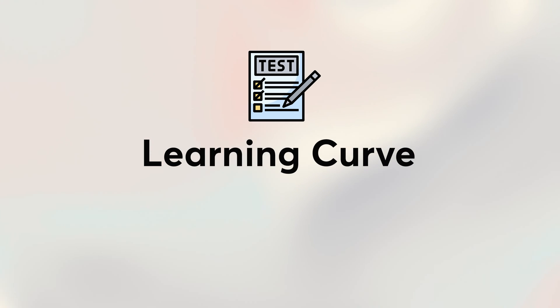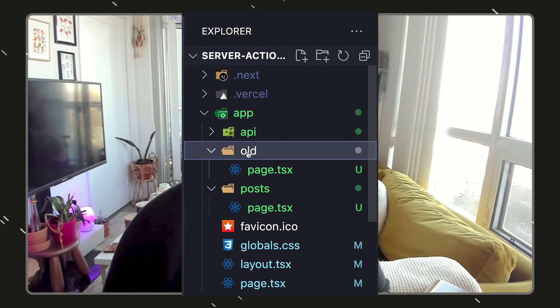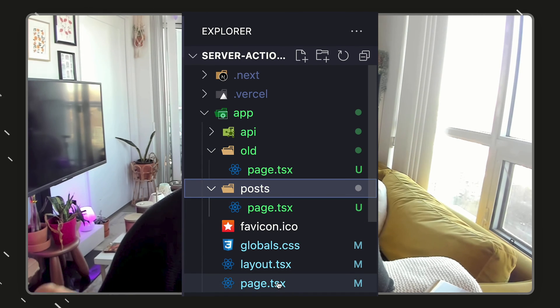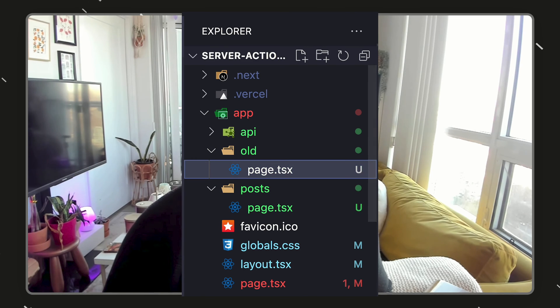There is definitely a steep learning curve when you switch to AppRouter because of a few things: caching on routing, intense caching, and the fact that developers are not yet fully familiar with React server components and how to architect your components. That needs to change as you create new files inside your app directory. Plus, it's harder to tell files apart because everything is page.tsx and you have to look at the folder name to figure out the specific route.